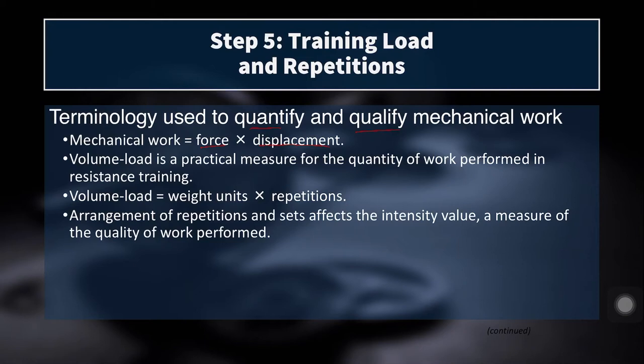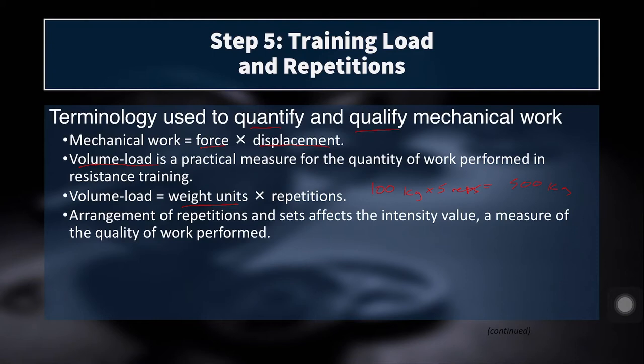Volume load is a practical measure for the quantity of work performed in resistance training. Volume load equals weight — whether in pounds or kilograms — times repetitions. So if you back squatted 100 kilograms for a set of 5, your volume load for that set would be 100 kg times 5 reps equals 500 kilograms. Note that this does not take into account mechanical work or displacement. A full range of motion back squat versus partial squats will have much more mechanical work, but the same volume load.